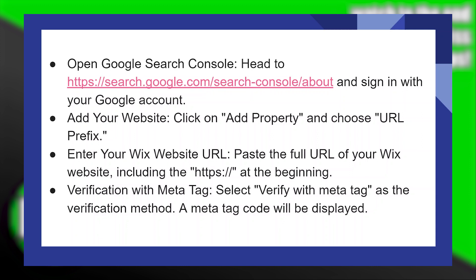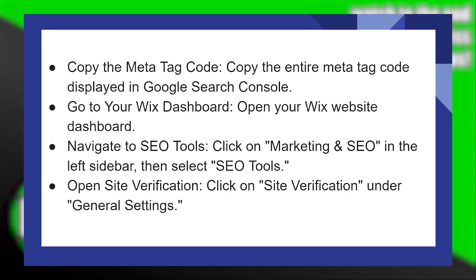Paste the full URL of your Wix website, including the HTTPS at the beginning. Select Verify with Meta Tag as the verification method — a Meta Tag code will be displayed. Copy the entire Meta Tag code displayed in Google Search Console.